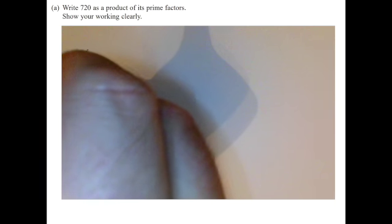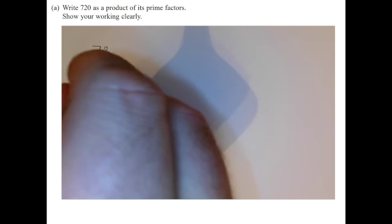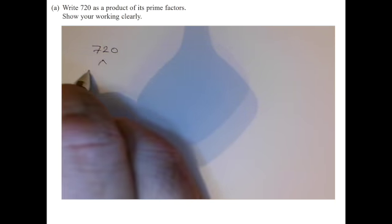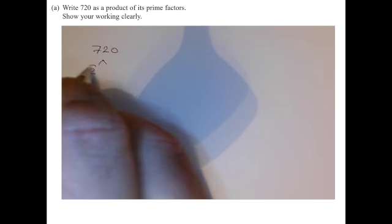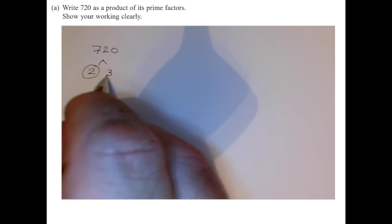OK, so we've got to break down this 720 into its prime factors. And the best way of doing that, I think, is to keep dividing through by 2 until you get to a number that you can factorise using primes other than 2.